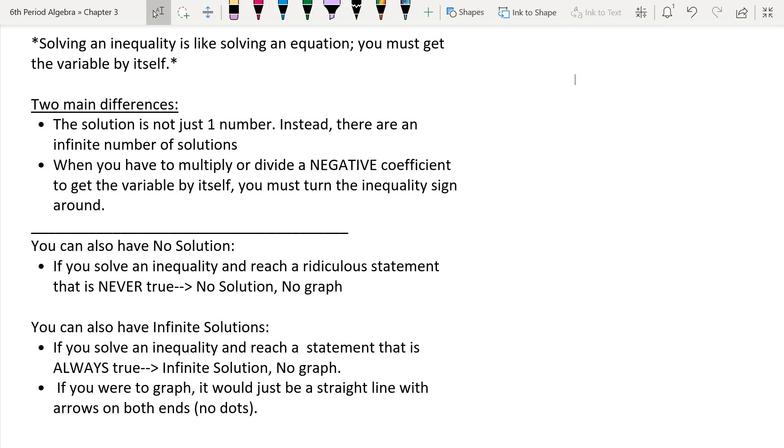Two main differences is that our solution is not just one number. There's an infinite number of solutions. And what that means is that that arrow, when you graph it, points to all the numbers, either smaller than or greater than the number you came up with in your inequality. Well, numbers go on forever, so that arrow goes on forever. So you have an infinite number of solutions.